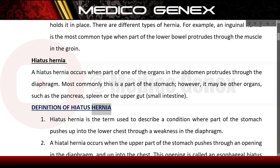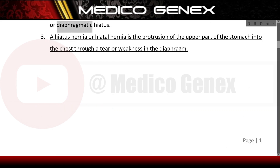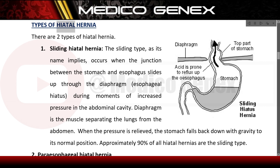Definition of hiatus hernia. Hiatus hernia is the term used to describe a condition where part of the stomach pushes up into the lower chest through a weakness in the diaphragm. A hiatal hernia occurs when the upper part of the stomach pushes through an opening in the diaphragm, called the esophageal hiatus or diaphragmatic hiatus, and up into the chest. It is the protrusion of the upper part of the stomach into the chest through a tear or weakness in the diaphragm.